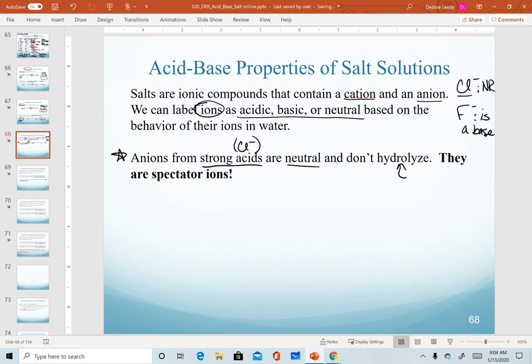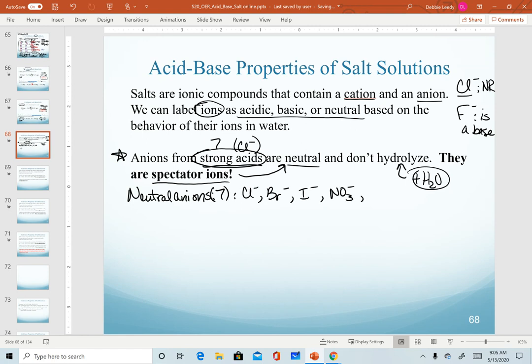Any anion that comes from a strong acid like chloride are considered to be neutral. They do not hydrolyze and hydrolyze means reacting in water. So all anions that come from strong acids are neutral and they are also called spectator ions. Remember from first semester chemistry, spectator ions are the ones that don't react. They don't react because they are neutral. So this is where you really need to know your strong acids list. Recognize that we have seven strong acids. And so the anions, the conjugate bases of those strong acids are going to be neutral.